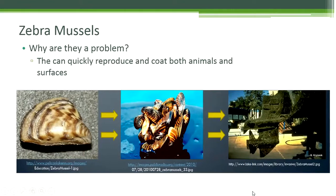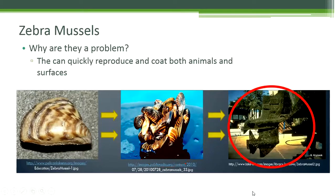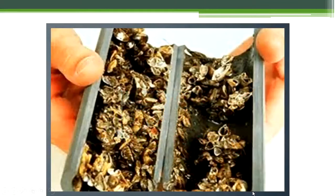So why are zebra mussels a problem? Zebra mussels reproduce quickly and attach to any available surfaces, including native clams and mussels, and any man-made structures in the water. This picture shows a cross-section of a pipe completely clogged with zebra mussels. If boats or other equipment underwater isn't cleaned frequently, then zebra mussels will attach.